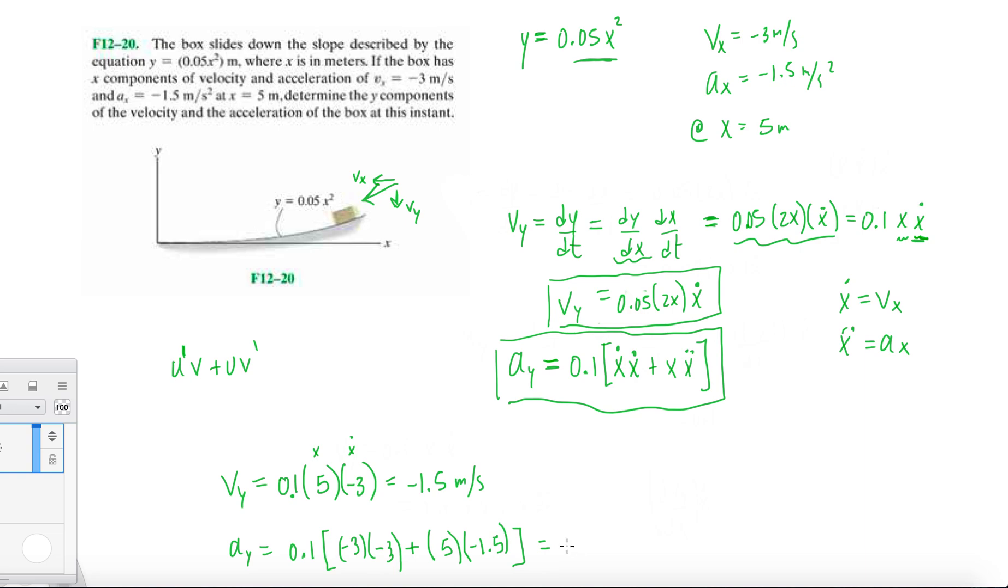So because this is positive, this is actually telling you that the box is indeed slowing down as it is approaching the bottom of the slide. And that's it.